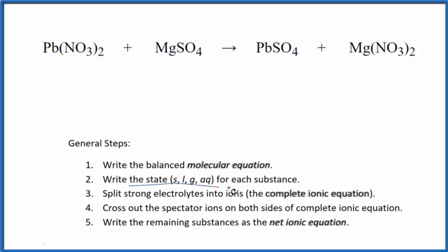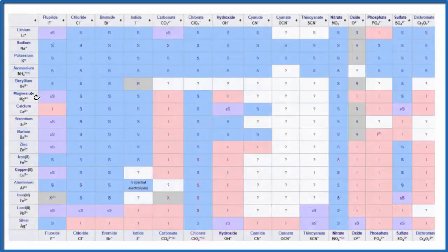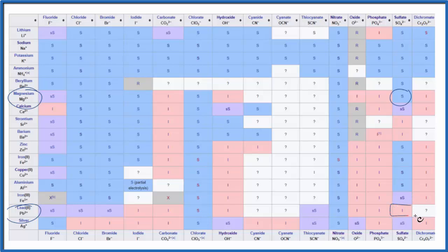Now we can write the state for each substance. Lead 2 nitrate — nitrates are very soluble, so I'm going to write AQ here. Sulfates in general are soluble, but let's look this up on a solubility table. We find magnesium right here, and way over here we have sulfate — magnesium sulfate is soluble. But let's look at lead sulfate — lead 2, we go over to sulfate, and we see that it's insoluble. So lead sulfate is one of the few sulfates that's not soluble.